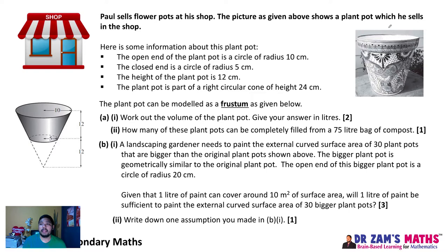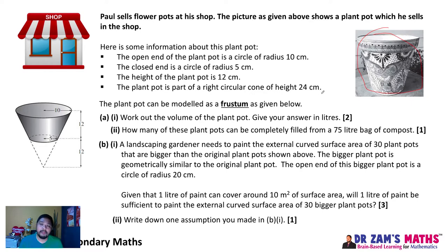These are the kind of pots that Paul sells. This kind of question will be quite common for Secondary School Math, especially O Level or N Level E Math. Normally this kind of question is a problem solving question that requires your children or yourself to make use of mathematics to solve a problem. It's a real world context kind of problem. Paul sells flower pots at his shop and these are the sort of plant pots given.